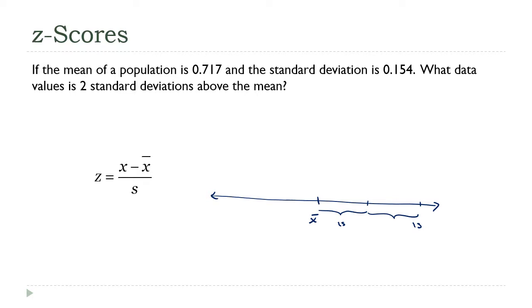Remember, this two standard deviations above the mean, that is the z-score. So all I have to do to get this, I'm going to go to my formula. I'm going to put two in here for the z-score. I'm trying to find the data value. I know my mean is 0.717, and my standard deviation is 0.154. Now, all I have to do, solve this for x.